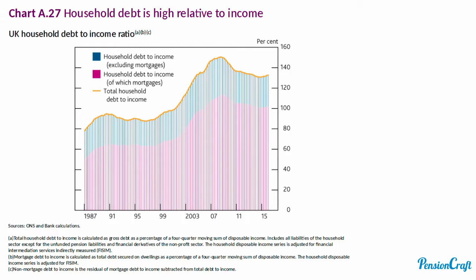But there are some worrying things about the UK economy. The primary worry for me is household indebtedness. In the UK, we're up to our eyeballs in mortgage debt. The measure used by the Bank of England is the household debt to income ratio. If the household income is 100k and the household debt is 100k, that ratio would be 100%. At the moment, we're not far below where we were before the global financial crisis in 2007. The UK economy never really de-levered after the crisis. That means that if interest rates do increase, it could be very expensive to service the debt that we hold, and that may be a significant drag on UK growth.